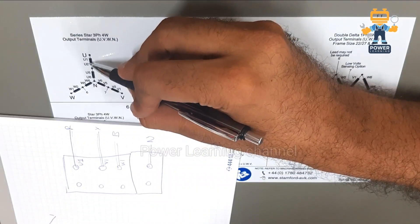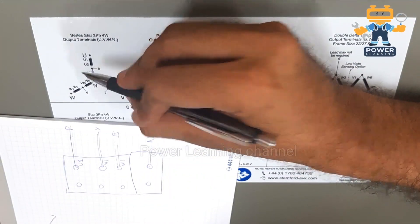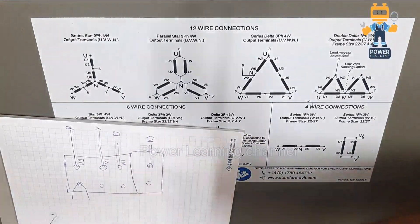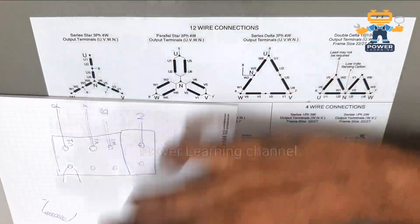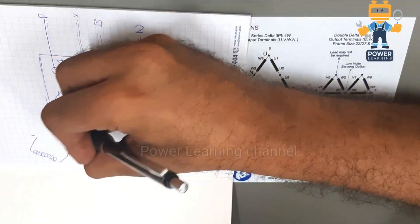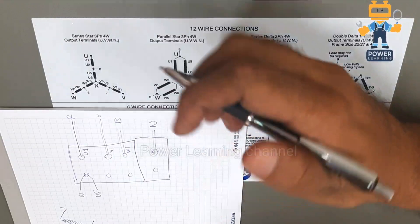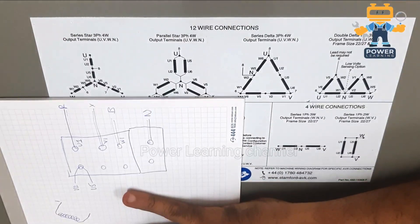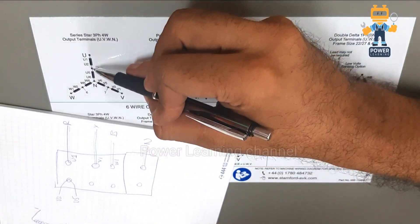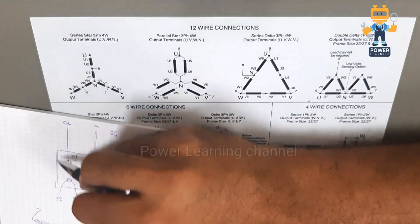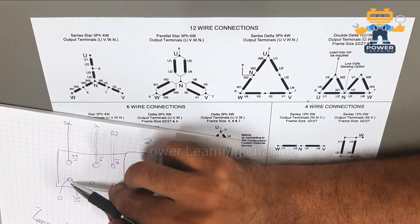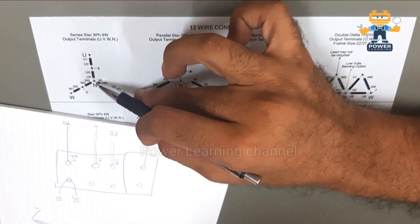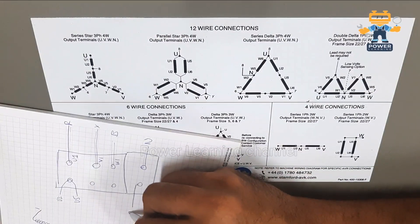After connecting the three output leads, we connect u2 with u5 — these two winding ends join together inside the terminal box. This wire comes from inside the alternator. Then from u5, the other end is u6, and u6 is connected to our neutral point.